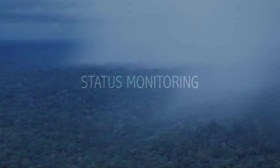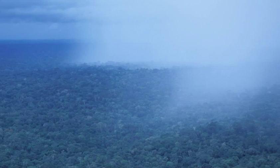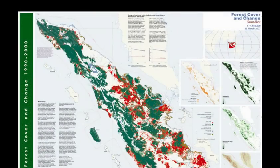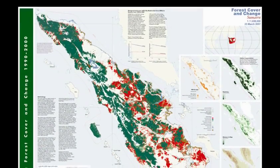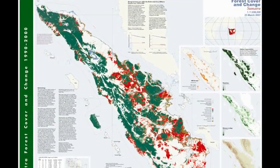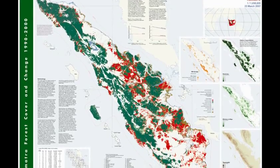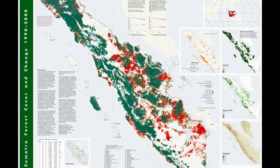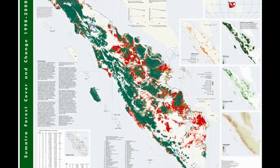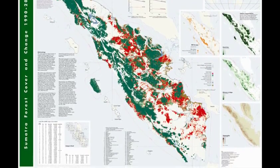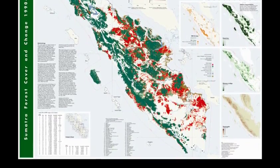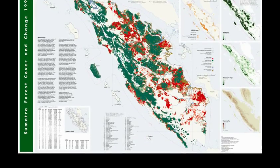At a broader scale, we want to measure trends in the status of biodiversity over time, irrespective of investment. Monitoring at a national, regional, and global scale is called status monitoring. It is referred to within CI as outcomes monitoring.